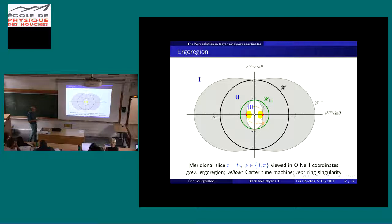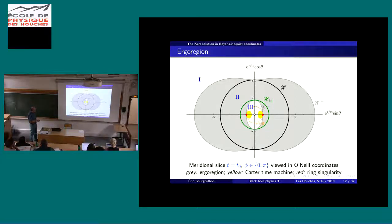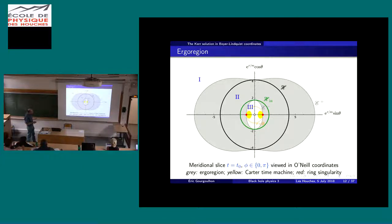This is a meridional plot of the Kerr spacetime using O'Neill coordinates, with exponential of r on one axis, sine theta and theta on the other. The axis of rotation, where the killing vector d/d-phi is zero, is exactly here. This is a t-equal-constant and phi-equal-constant slice. Here again we have the r-plus hypersurface, the r-minus hypersurface, and in gray, this is the ergoregion. It's a function of theta.